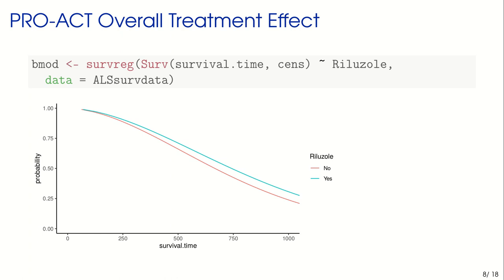Let's look at our base model — the overall treatment effect in these patients. We compute a survival model using the R function survreg, with information on survival time, censoring, and the treatment indicator for whether the patient took Riluzole or not. In the graph, we see a survival curve: the red curve represents patients who did not take Riluzole and the blue curve represents patients who did. The blue curve is a bit above the red curve — not by a huge amount, but by at least a few months.